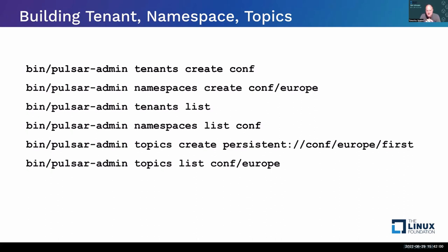The naming of Pulsar topics is important. The first word — 'persistent' — means messages will be stored, perhaps forever. If you don't want that, use 'non-persistent' — for example, if you've got a very loud device constantly sending the same thing every fraction of a second and you just need to sample it or don't mind losing some messages. Most people use persistent, which stores data forever if you need.